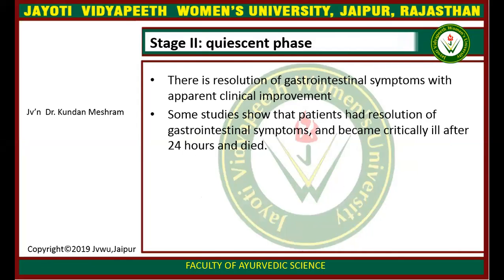These initial local corrosive changes sometimes lead to the formation of gastric, enteral, and pyloric strictures, observed in some patients between 2 and 8 weeks after the initial episode of poisoning. In Stage 2, the quiescent phase, there is resolution of gastrointestinal symptoms with apparent clinical improvement. However, some patients may become critically ill after 24 hours.